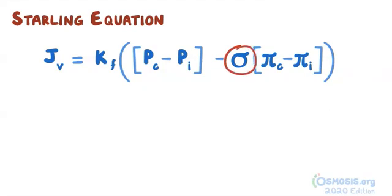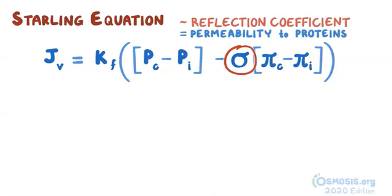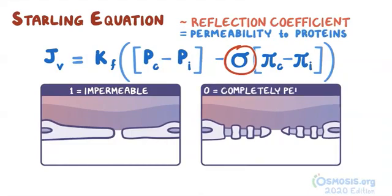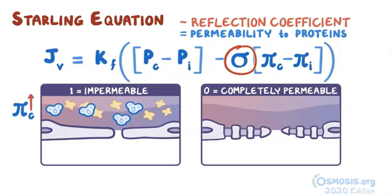Lastly, there's the sigma or reflection coefficient, and it describes the capillary's permeability to proteins. A coefficient of one means the capillary is impermeable to protein, whereas a zero means it is completely permeable. So, when the reflection coefficient is one, it means that plasma proteins, like albumin, are superconcentrated in capillary blood, and exert a great osmotic pressure. So, an increase in capillary protein concentration will lead to increases in capillary oncotic pressure, and therefore decrease the movement of water towards the interstitial space.